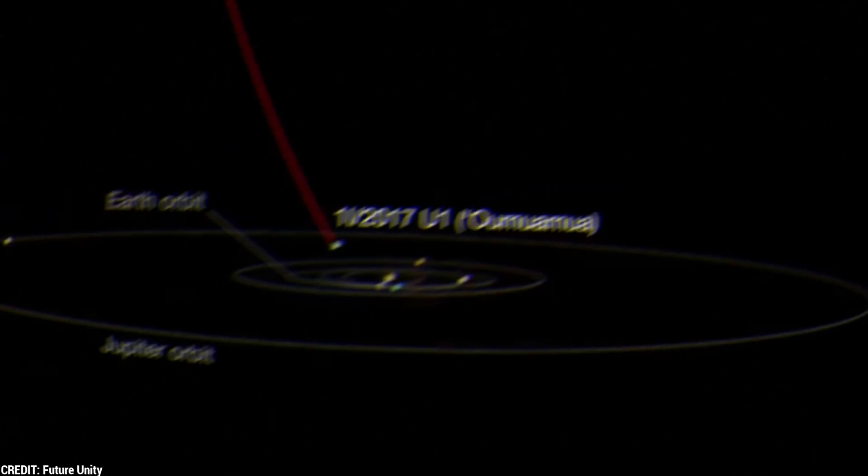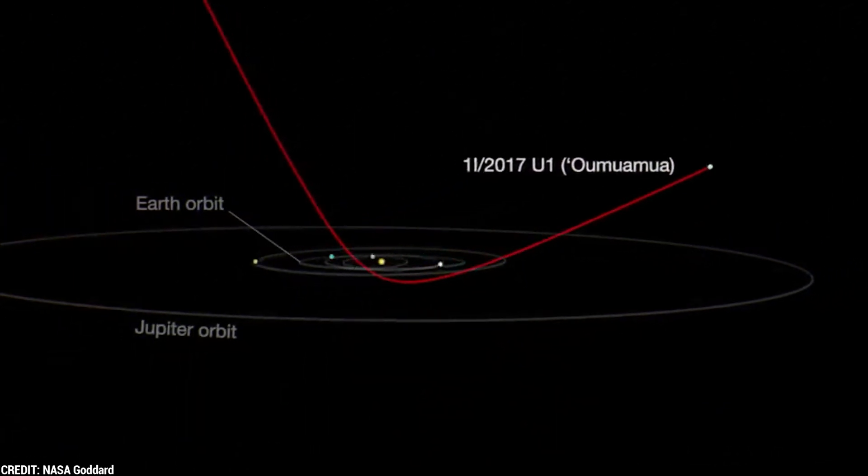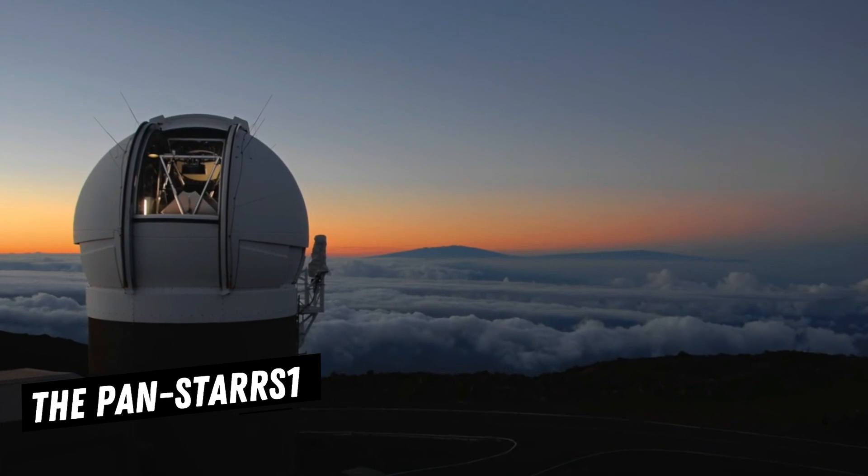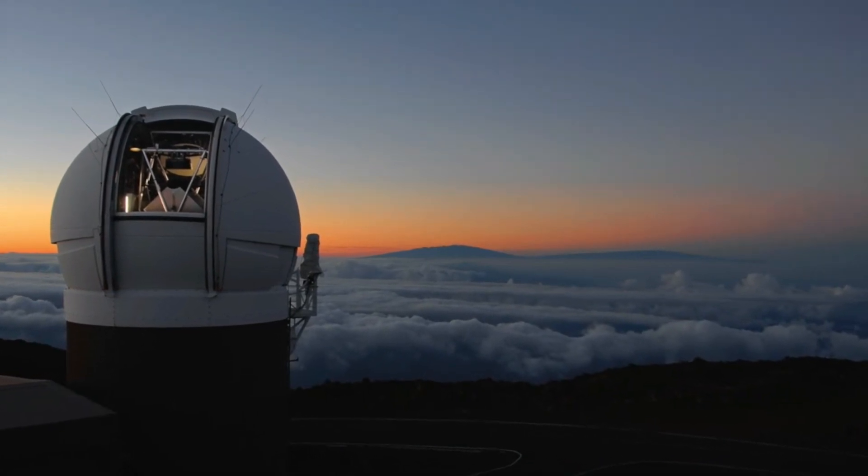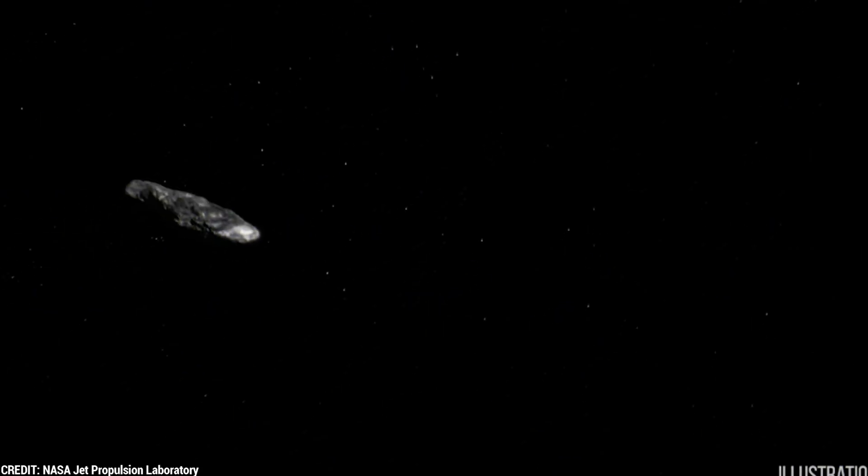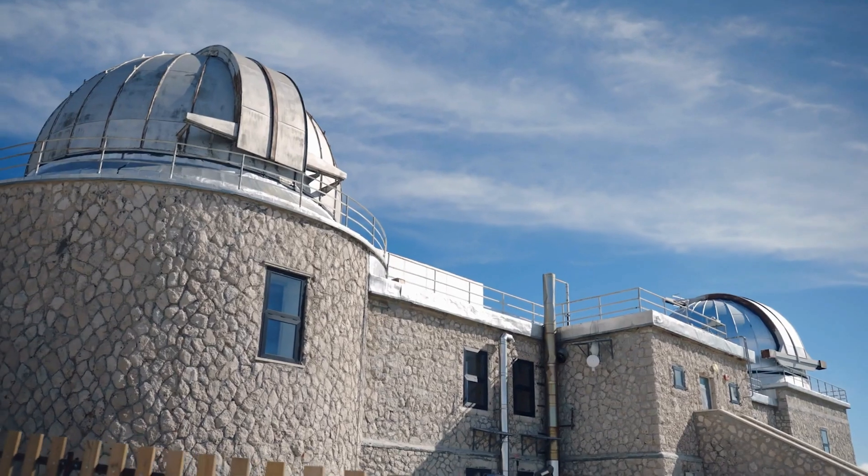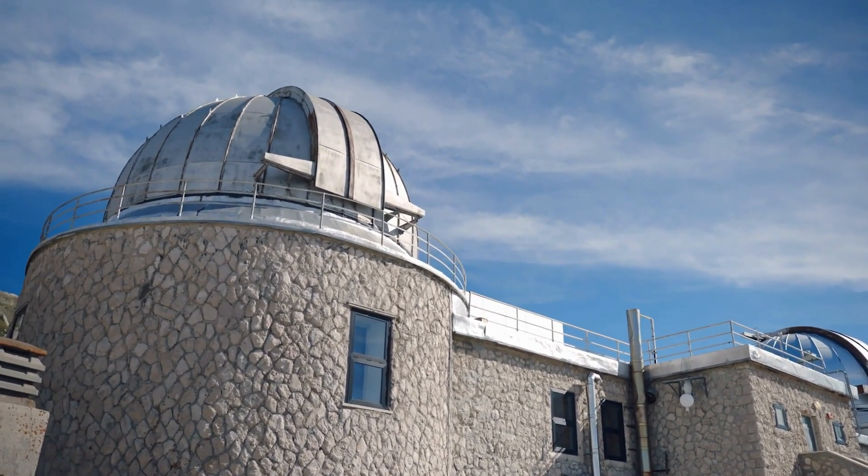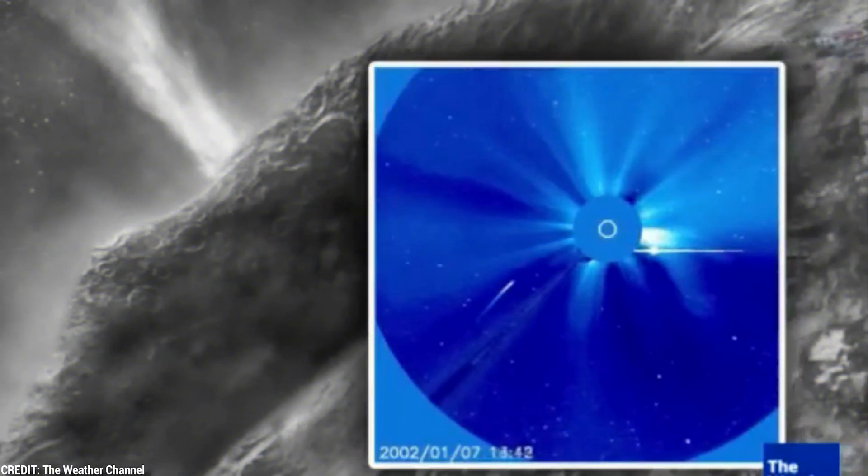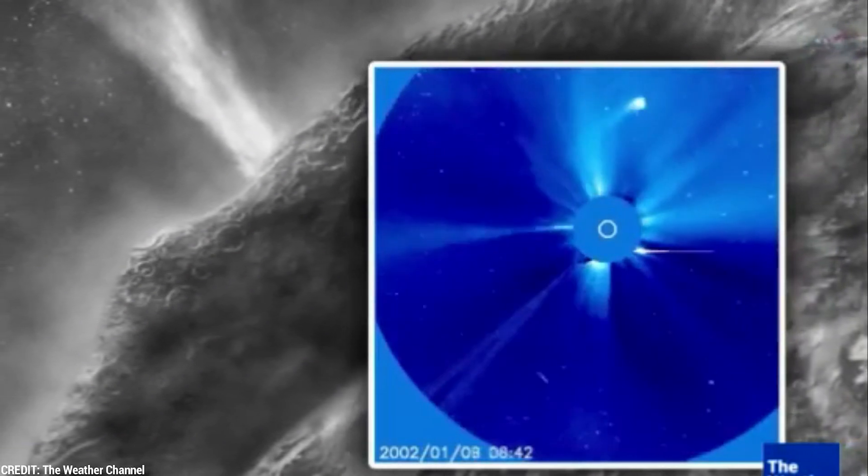Now, let's explore how Oumuamua entered our solar system. The Pan-STARS One telescope at the University of Hawaii initially detected this celestial object, which had already completed its journey around the Sun and was preparing to depart our solar system. Astronomers worldwide utilized different telescopes to observe Oumuamua for about four months, until it became too faint to track.